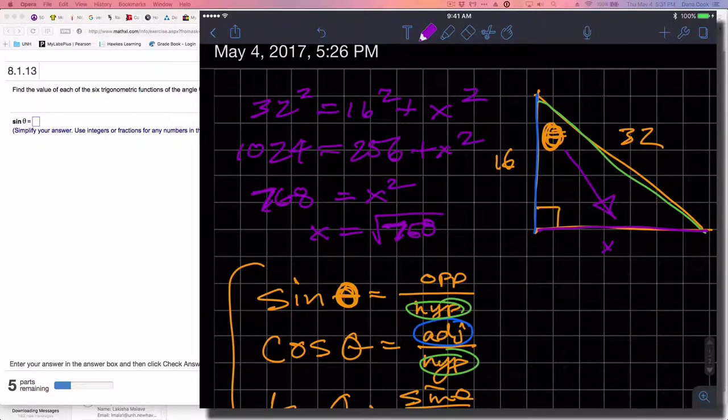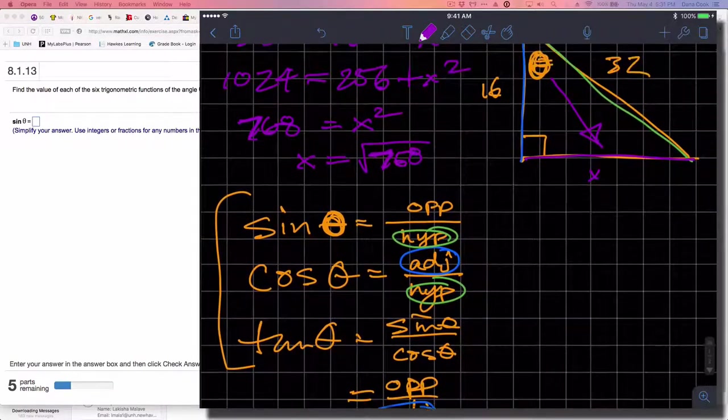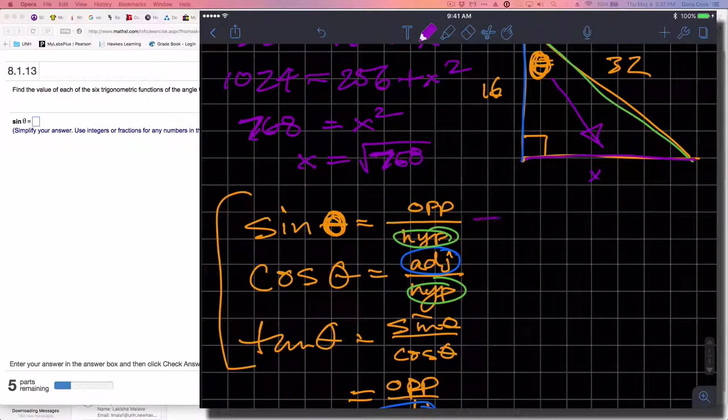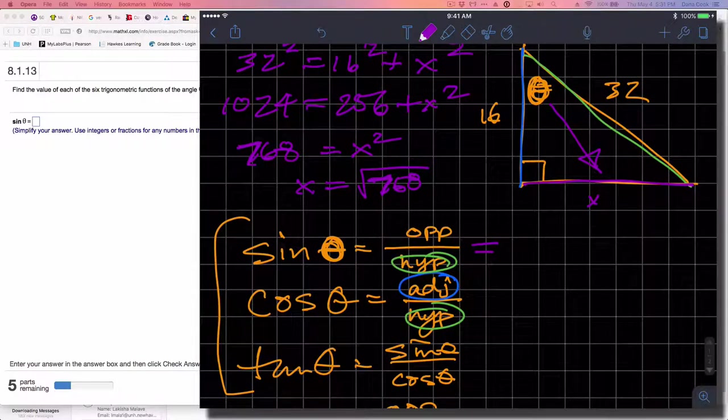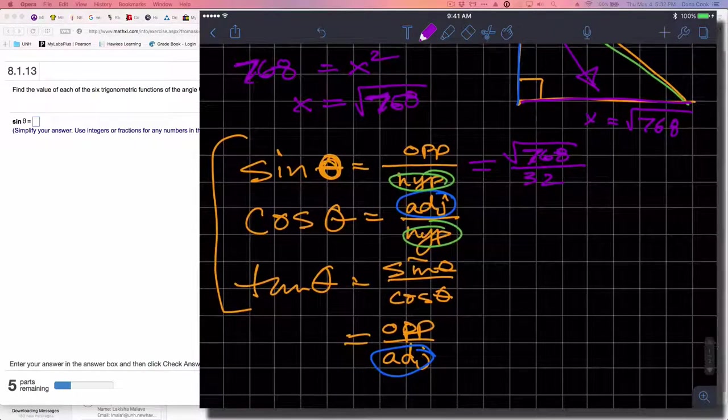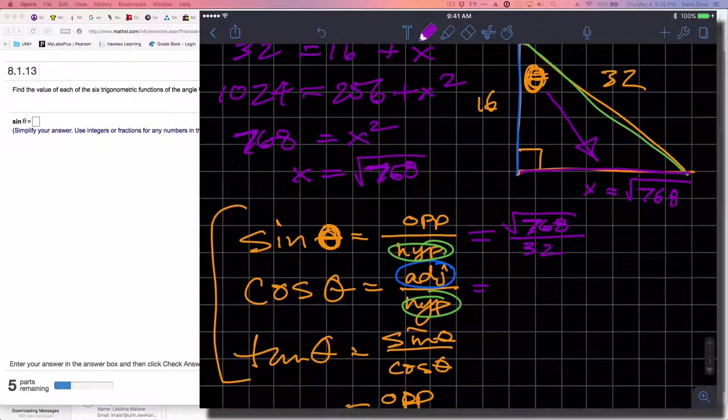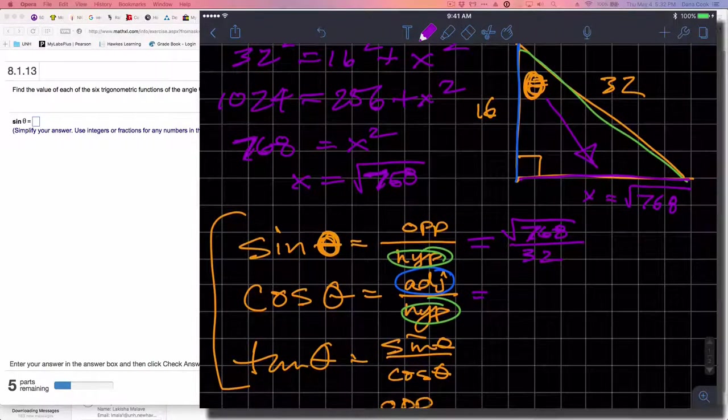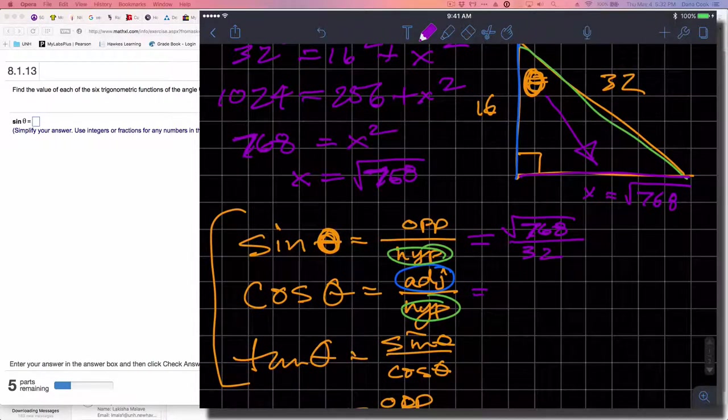Let's figure out how to work this out. Sine is the length of the opposite leg, which is the square root of 768 divided by 32. The cosine is the length of the adjacent leg divided by the hypotenuse, which is 16 over 32, which simplifies to one half.